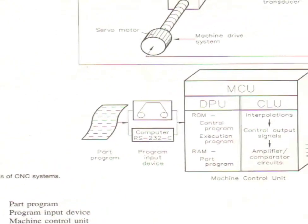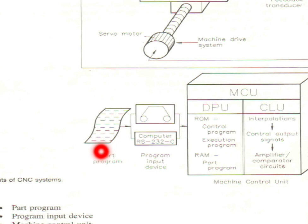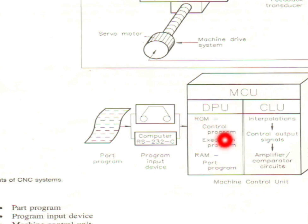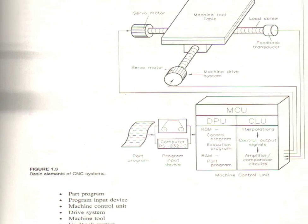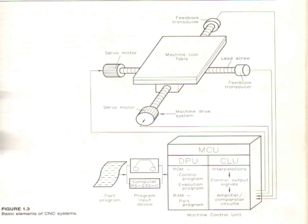The programmer or computer prepares the part program and feeds it to the computer, and the computer sends it to the MCU — that is the Machine Control Unit. The MCU contains ROM for control program execution, RAM for the part program, and a CLU that performs interpolation, control output signals, amplifier, and comparator circuit. The machine control unit then sends instructions to the servo motor, which works as per the part program.